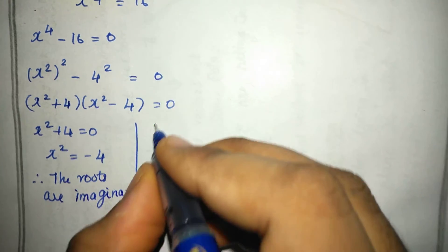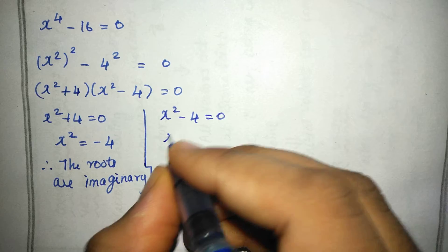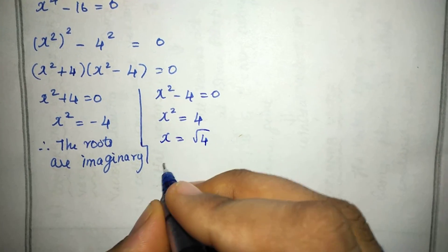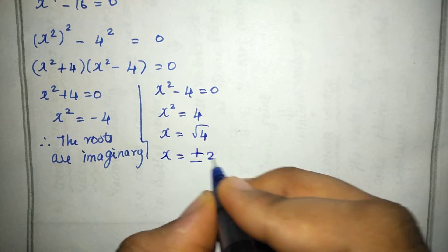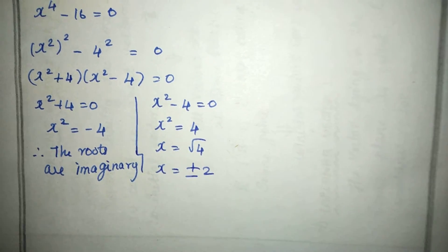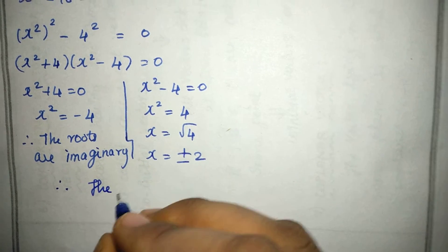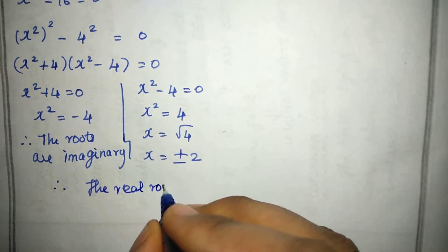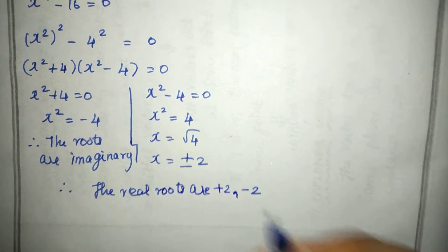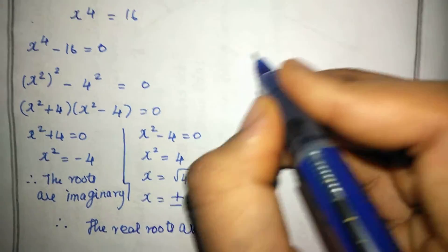Now for the second factor, x² − 4 = 0, so x² = 4. Taking the square root gives x = ±2. Therefore, the real roots are +2 and −2. This is our answer.